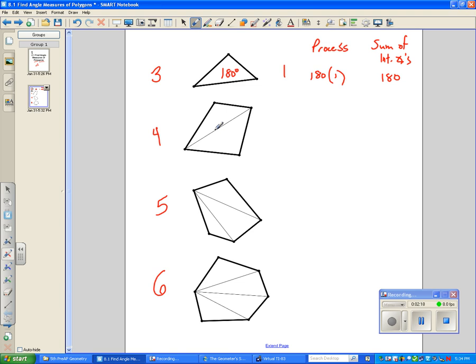Now in the quadrilateral, by drawing that diagonal - by the way, a diagonal connects two non-adjacent vertices. That meaning this vertices and this vertices is adjacent to this vertices, but a diagonal connects a non-adjacent vertices to it. Notice here we have two triangles. That means I have the 180 degrees and I have another 180 degrees. So my process to find out the sum of the interior angles is simply 180 times two, which is 360.